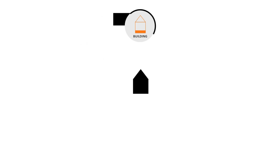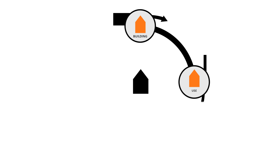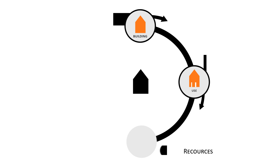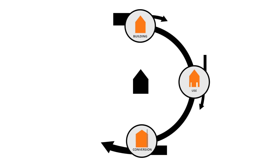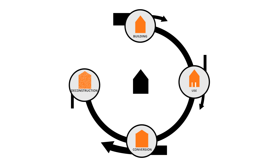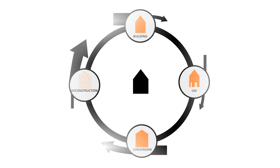The life cycle of a building is joined by cycles for the production of the needed material. During the conversion from the raw material to the needed building material, byproducts remain as waste. In conclusion, resources were fed during construction, usage, conversion and demolition, leaving useless waste.